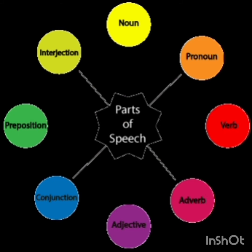Material noun denotes the matter or substance of which things are made. It is also called a mass noun. For example, 'river' is a common noun, but 'water' — the substance it is made of — is a material noun. 'Sheep' is a common noun, but 'mutton' is the flesh, so it is a material noun. 'Chain' is a common noun, but 'gold' in 'gold chain' is a material noun. Similarly, 'wood' in 'wooden furniture' is a material noun.